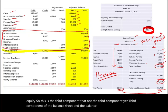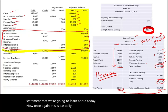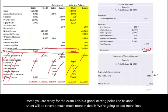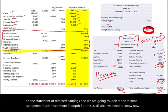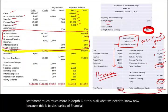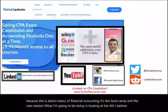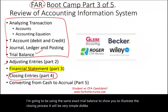This is basically an overview. If you're comfortable with this, that's very helpful, but it doesn't mean you are ready for the exam — this is a good starting point. The balance sheet, statement of retained earnings, and income statement will all be covered in much more detail later. In the next session, I'll be covering the fourth component of this bootcamp: closing entries, using this same exact trial balance to illustrate the closing process. Then we'll move on to the last session — converting from cash to accrual.